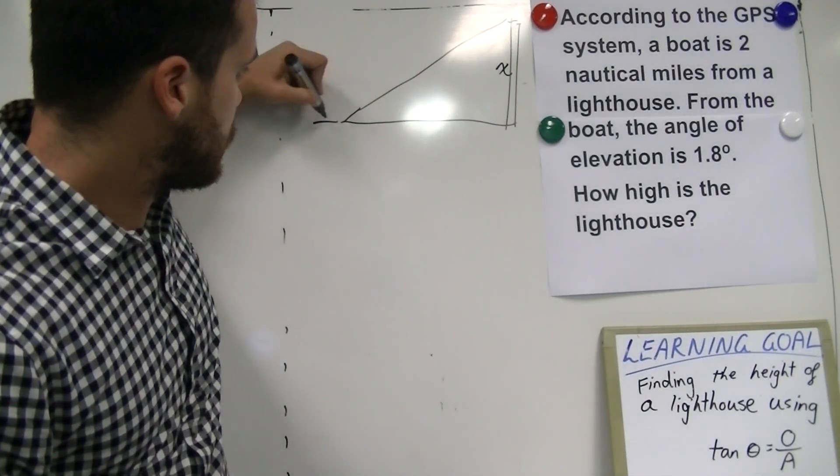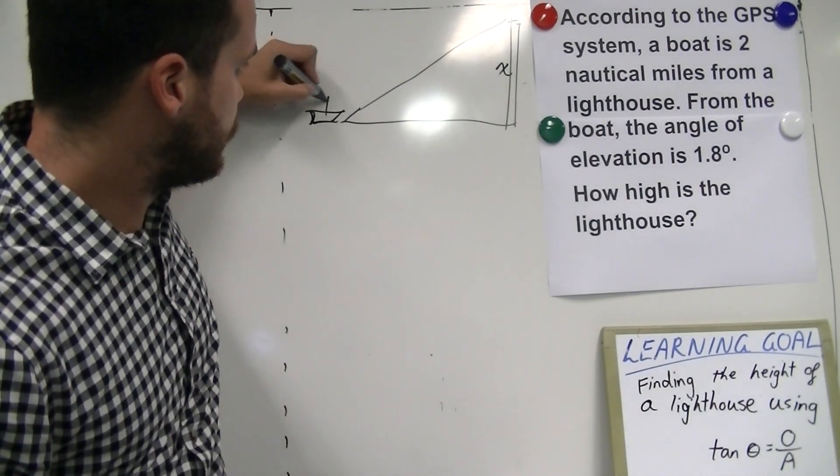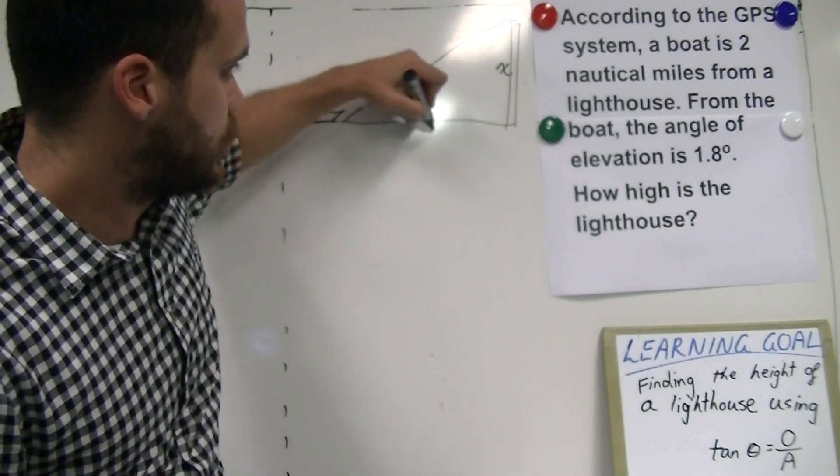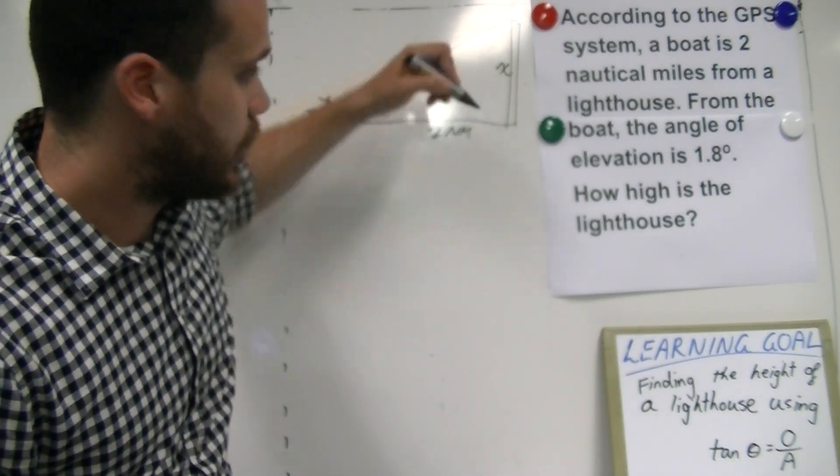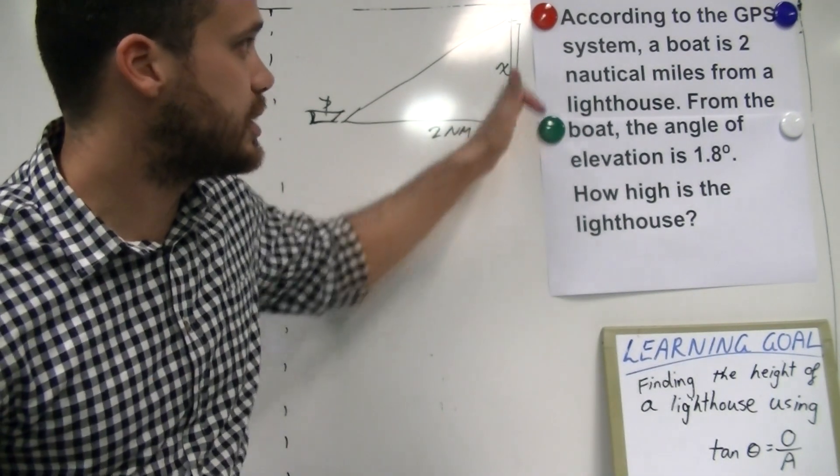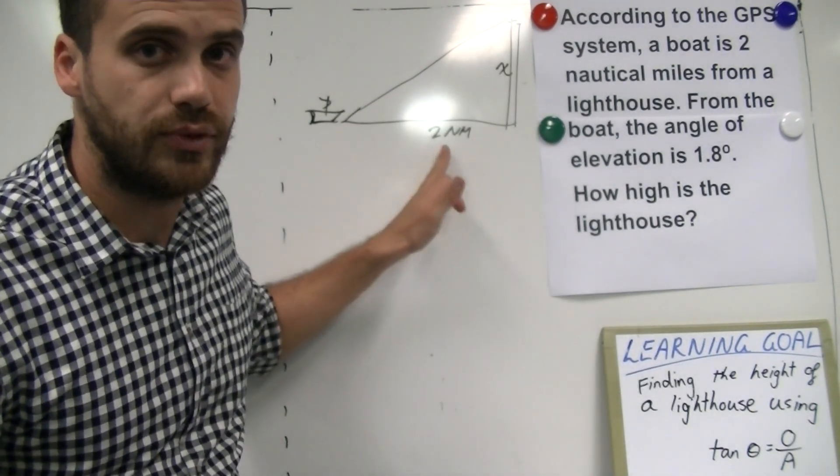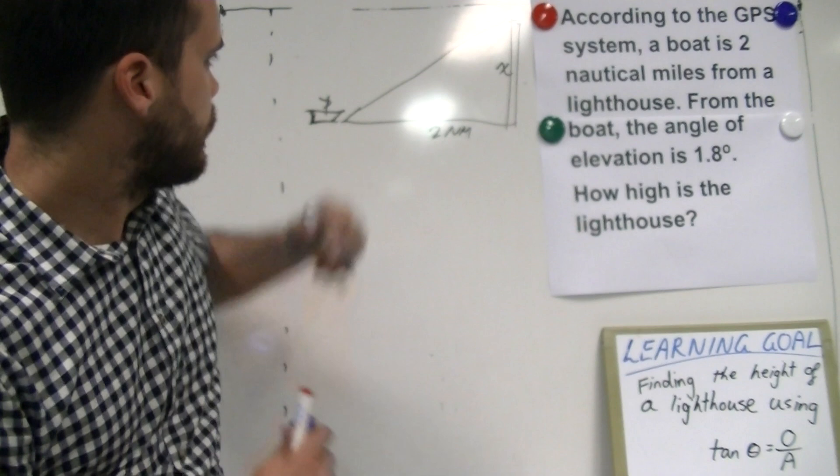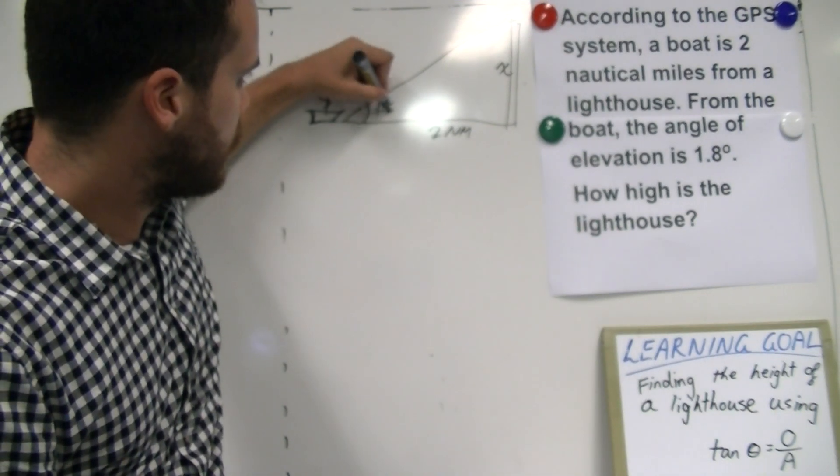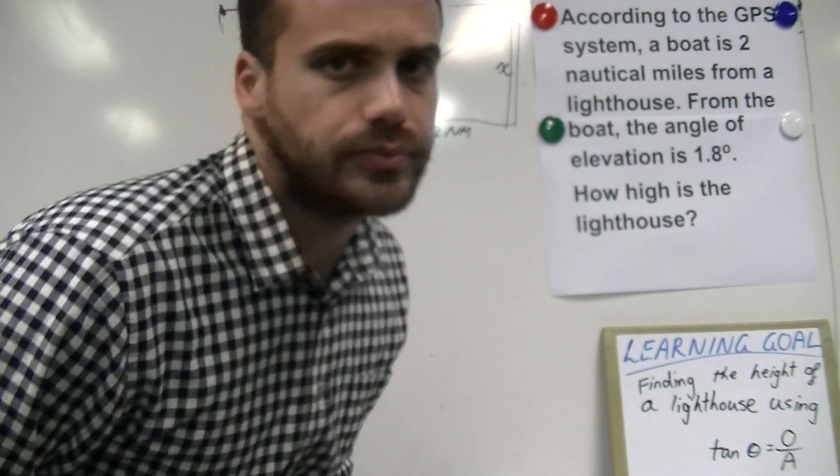Now, the distance from this boat is 2 nautical miles. That's a problem because we're going to want this in metres. So, we're going to have to convert that to metres as well. Our angle here is 1.8 degrees.